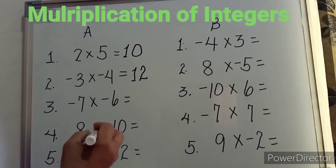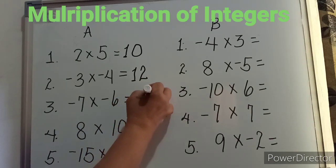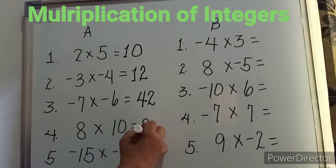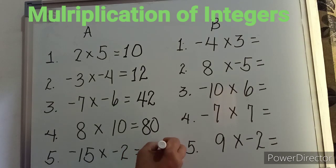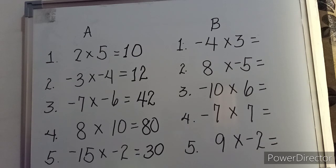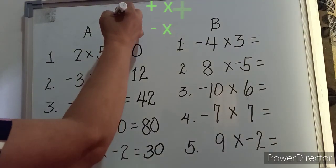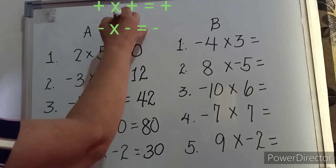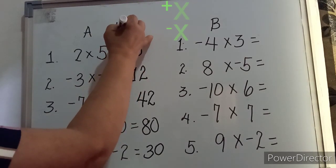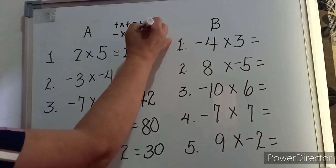Negative seven times negative six gives us positive forty-two. Eight times ten gives us positive eighty. So what did you notice? Multiplying a positive and a positive gives you a positive. Multiplying a negative times a negative also gives you a positive product. So the rule is: positive times positive equals positive, and negative times negative also equals positive.